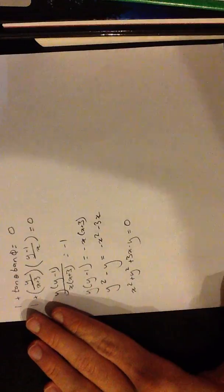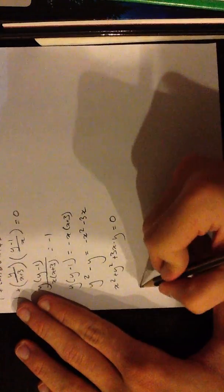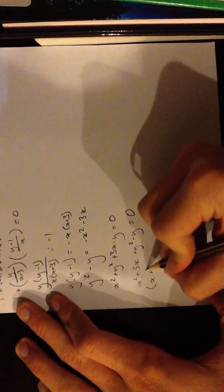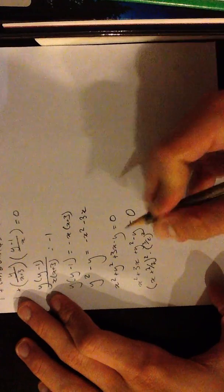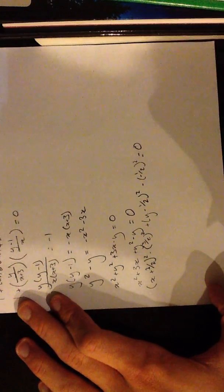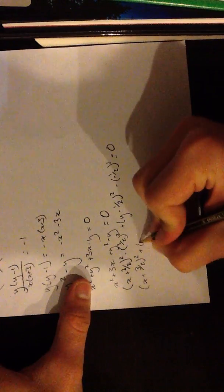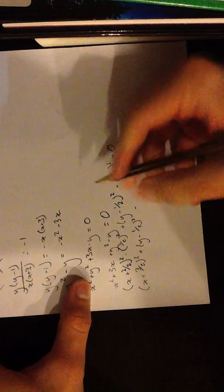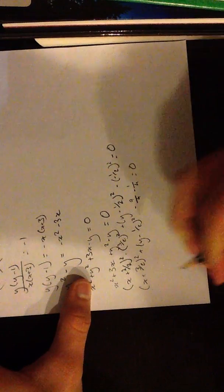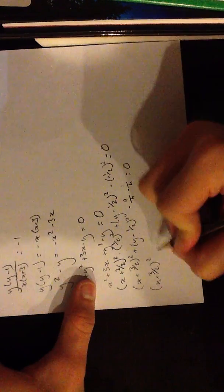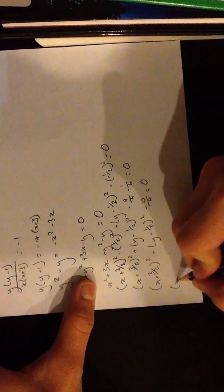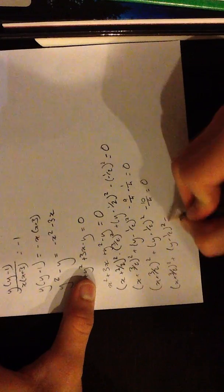Now we'll complete the square in order to find the equation of this circle. x squared plus 3x plus y squared minus y equals 0. So: (x plus 3 over 2) squared minus (3 over 2) squared plus (y minus 1/2) squared minus (1/2) squared equals 0. That gives (x plus 3 over 2) squared plus (y minus 1/2) squared minus 9/4 minus 1/4 equals 0, which simplifies to (x plus 3 over 2) squared plus (y minus 1/2) squared equals 10 over 4.